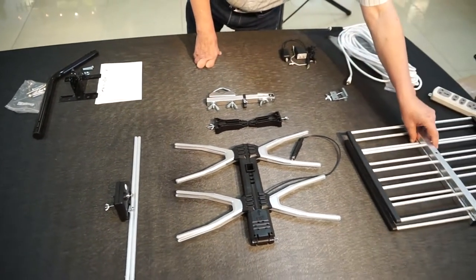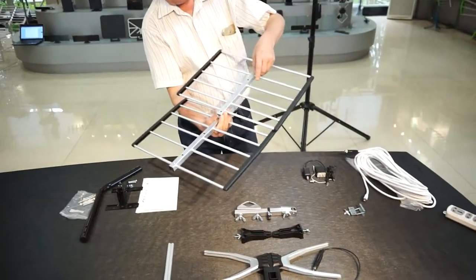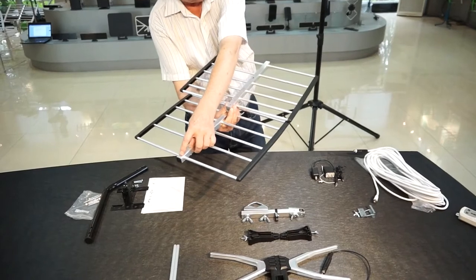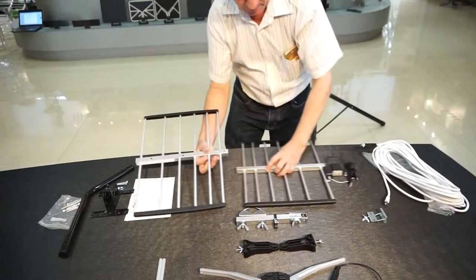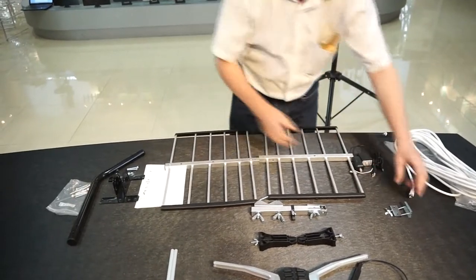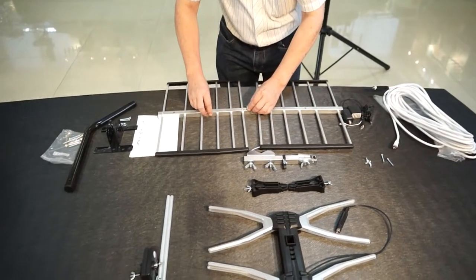We begin by assembling the reflector. You'll see at one end there's a second hole, the other end is not, that's the top. We have here two clips, one goes in the top, one in the bottom.